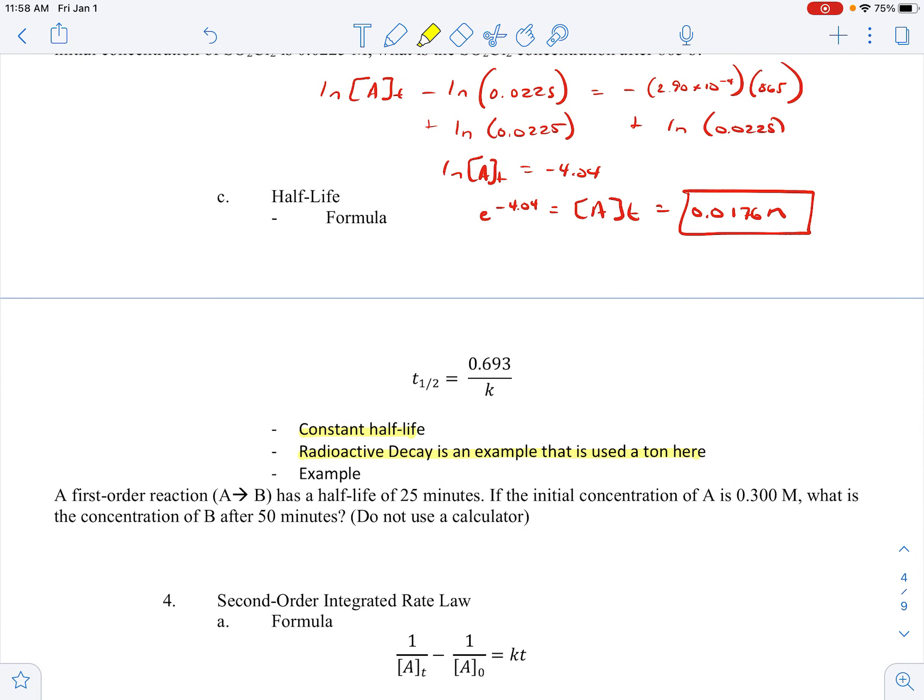So a first-order reaction has a half-life of 25 minutes. If the initial concentration is 0.30 M, what is the concentration after 50 minutes? So that would be two half-lives. So after one half-life, it's 0.15, and then 0.15 divided by two is 0.075. And that would be our answer.